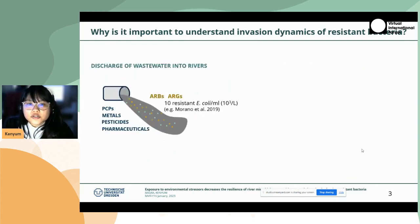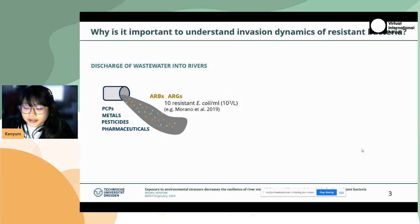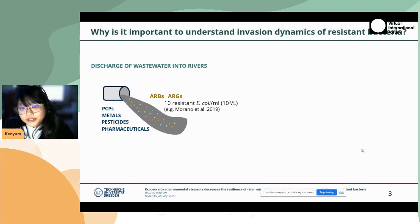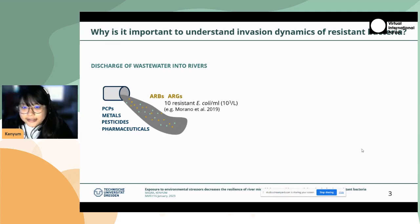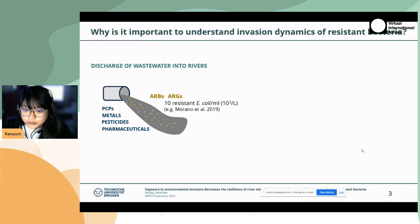When we discharge wastewater into rivers, we introduce ARBs — antibiotic resistant bacteria — and antibiotic resistant genes. One study showed that in European wastewater treatment discharge, there are 10 resistant E. coli per ml discharged into the rivers. This is for treated wastewater treatment plants, but there are wastewaters that are not even treated in so many places.